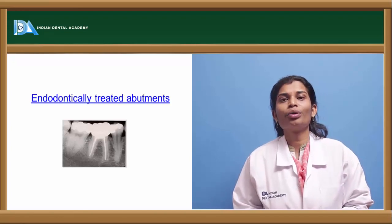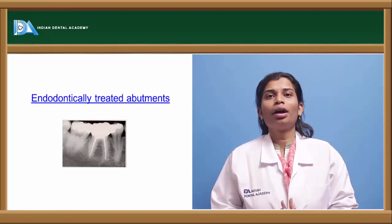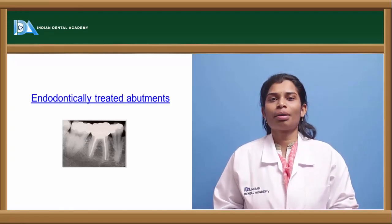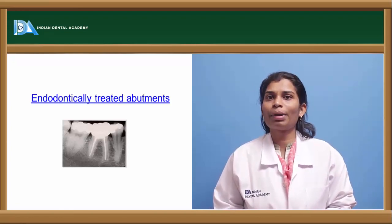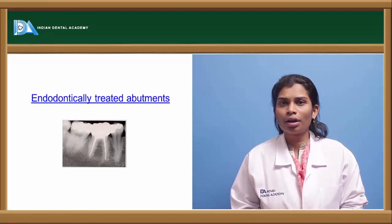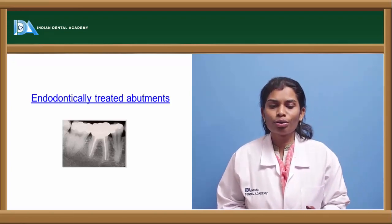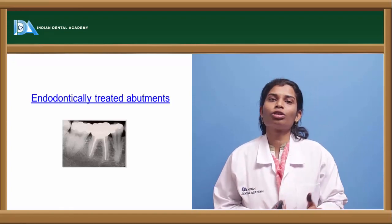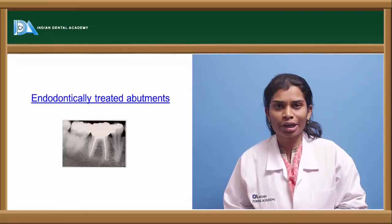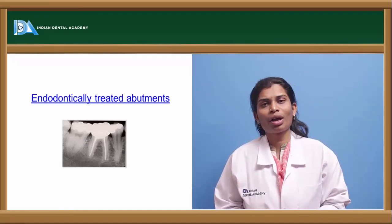Regarding endodontically treated teeth — if the abutment is endodontically compromised, it is mandatory to complete the required endodontic treatments before using it as an abutment. Teeth that are incompletely pulp-treated are not ideal abutments, as the greater loads may cause the tooth to fail in the near future, wasting the entire prosthodontic treatment.